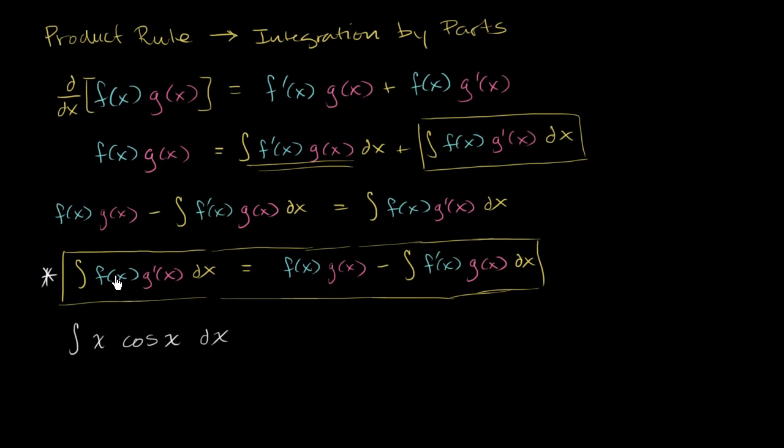Now, if you look at this formula right over here, you want to assign part of this to f(x) and some part of it to g'(x). And the question is, do I assign f(x) to x and g'(x) to cosine of x, or the other way around? Do I make f(x) cosine of x and g'(x) x?